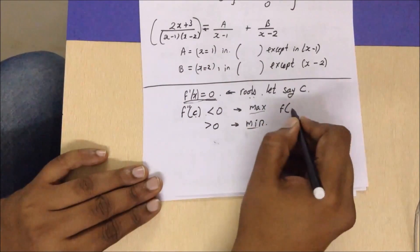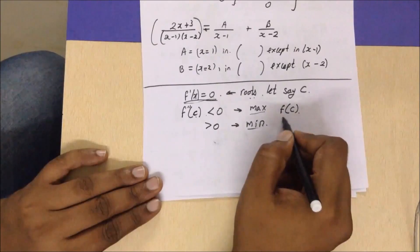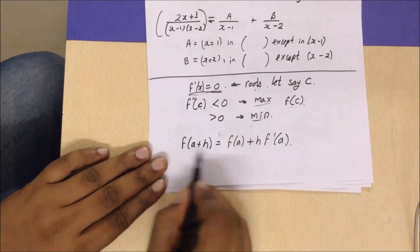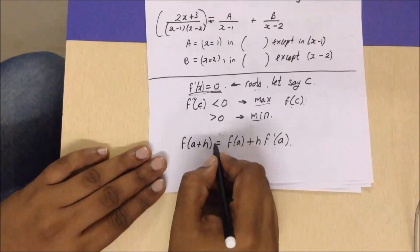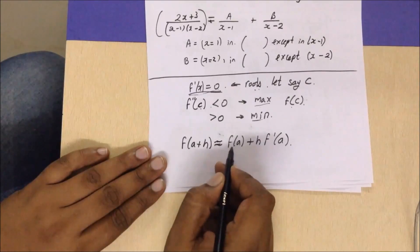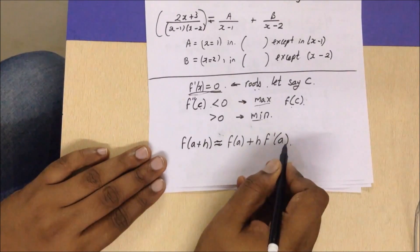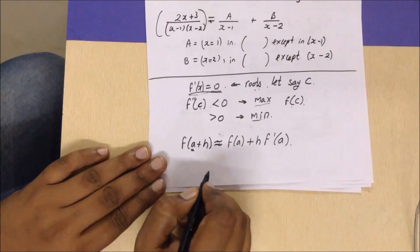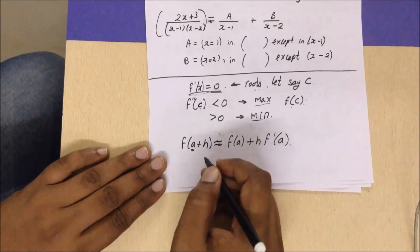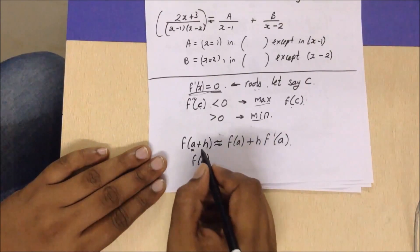To find the actual maximum or minimum value, substitute c into f(c). Next, for finding approximate values: f(a + h) ≈ f(a) + h·f'(a), where a is a value for which you know exactly the value of f(a), and h should be as small as possible.